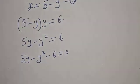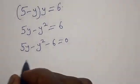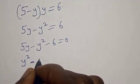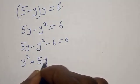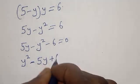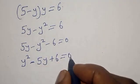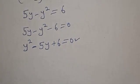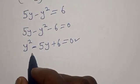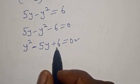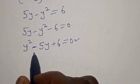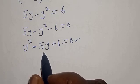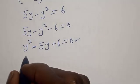Let's open the bracket. We have 5y minus y squared minus 6 is equal to 0. Rearranging, we get y squared minus 5y plus 6 is equal to 0. This is a quadratic equation, which can be solved by using the quadratic formula or the factorization method.